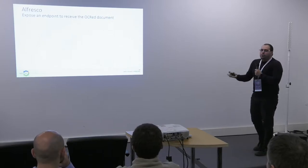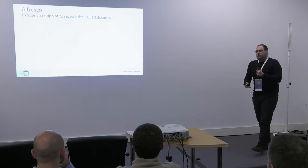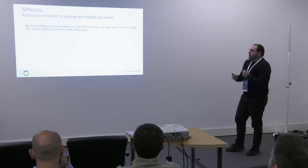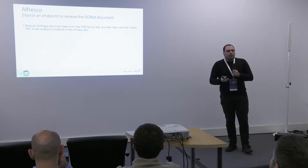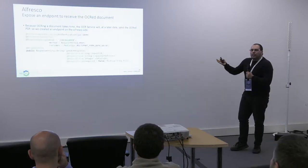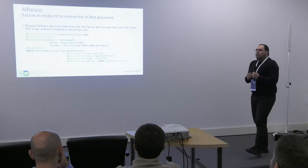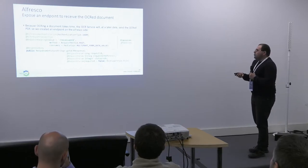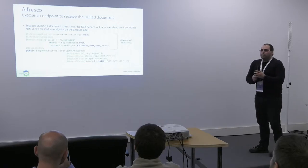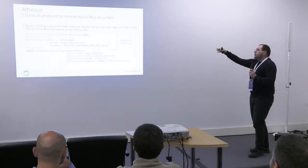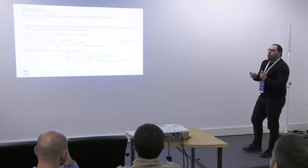It's very important that we expose an endpoint on the Alfresco side to actually receive the document when it's finished being OCR'd. Usually when people think about creating an endpoint in Alfresco, they think about web scripts — but this looks like a Spring-style controller. The reason I can write web scripts this way is because I'm using a library called Alfresco MVC. Its creator, Daniel Grechak, actually gave a lightning talk about this topic this morning. With this library I can write a Spring-style controller and it gets registered as a web script when Alfresco starts.